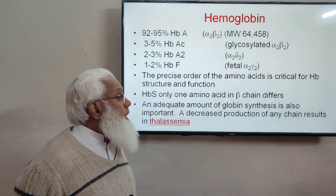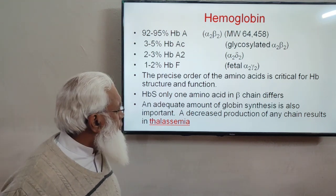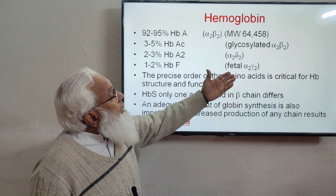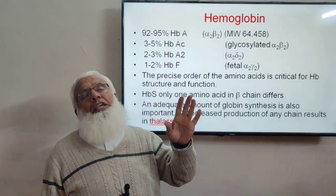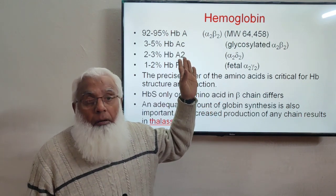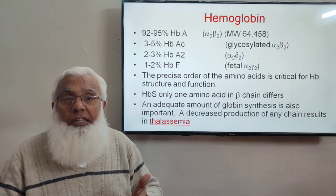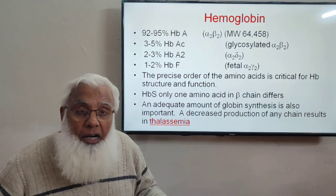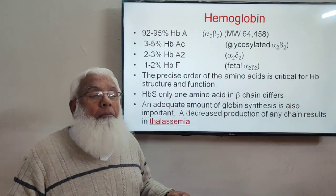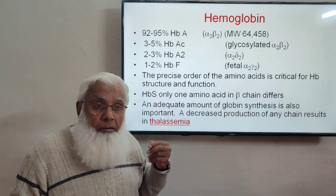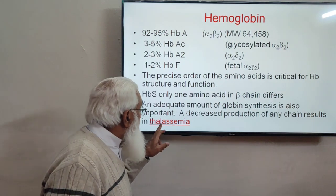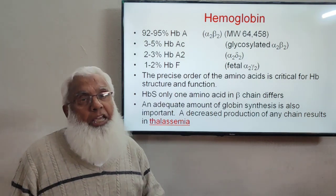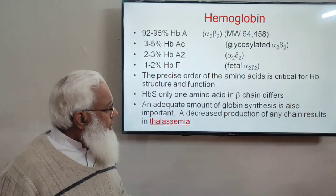An adequate amount of globin synthesis is also important. A decreased production of any globin chain — for example, if a person cannot produce beta chains due to a genetic deficiency — results in disease. Proteins are synthesized by transcription in the nucleus and translation in the ribosome, producing a specific amino acid sequence. If the responsible gene is deficient, a particular chain may not be formed. Thalassemia is the disease caused by deficiency of a hemoglobin chain gene, resulting in deficient alpha or beta chains.